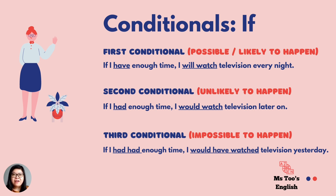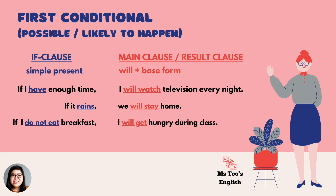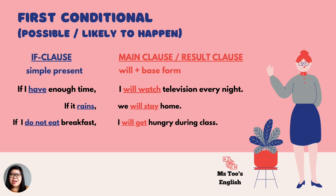Let's focus on the first conditional. For first conditional, there are three sentences. Let's look at the first one: if I have enough time, I will watch television every night. What does this mean? It means if I really have time at night, I will definitely watch TV. This is very likely to happen, so I use first conditional. And for the second example: if it rains, we will stay at home. Probably, if you look out now and you see it starts raining, then we will stay at home.